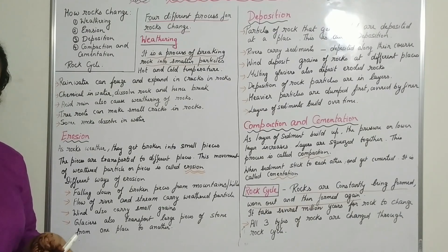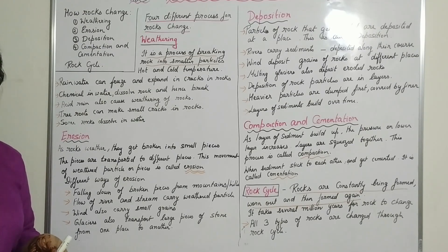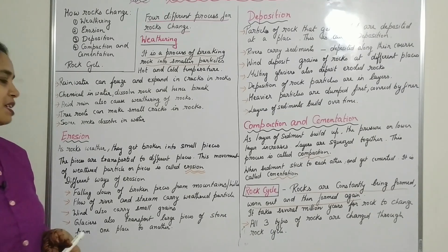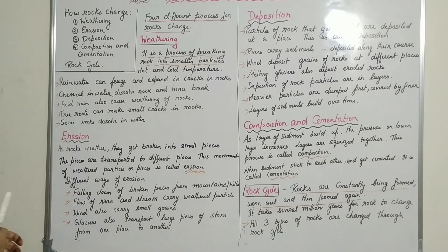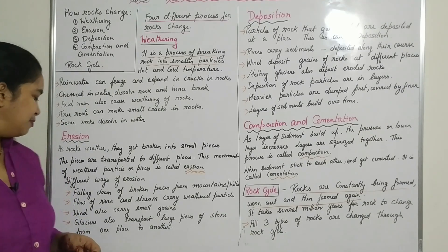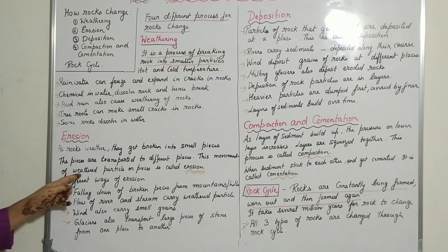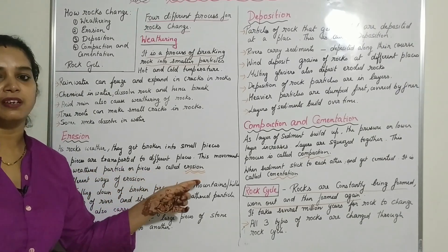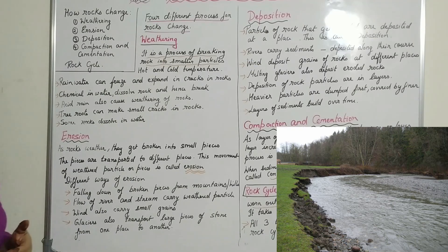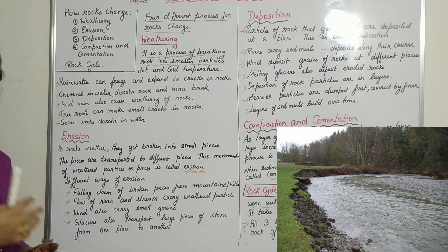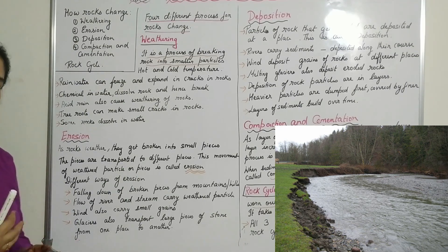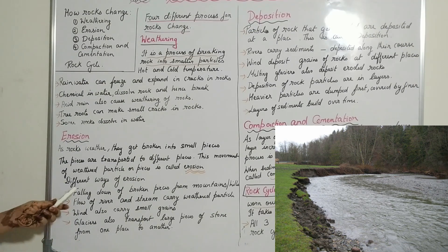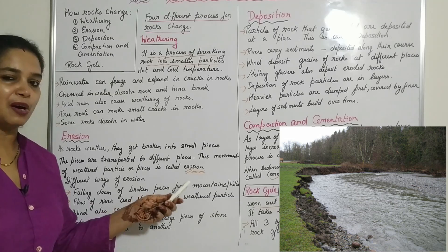You might have seen sand near river banks — this is nothing but big particles of rocks broken down into very small, fine particles that become sand. The movement of these weathered particles to different places is called erosion. This happens generally by water, wind, and glaciers.